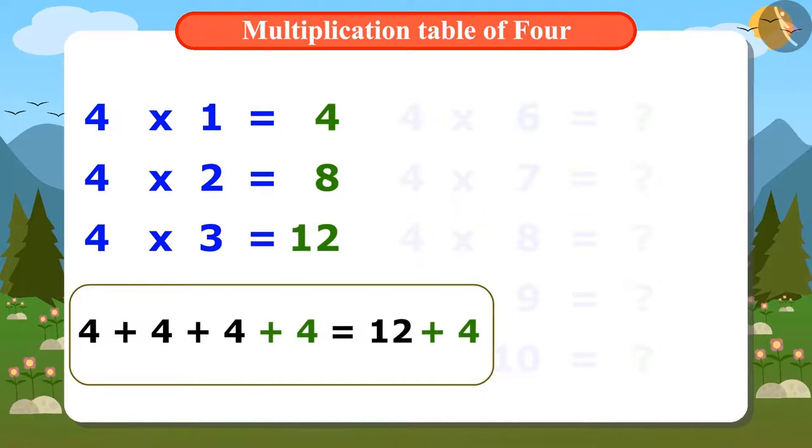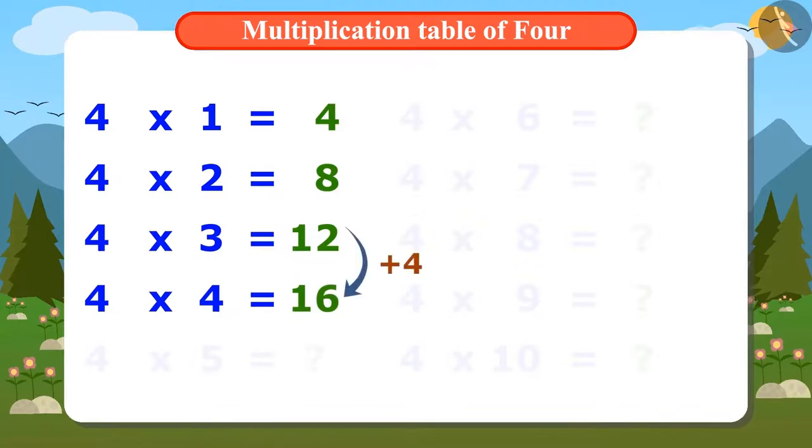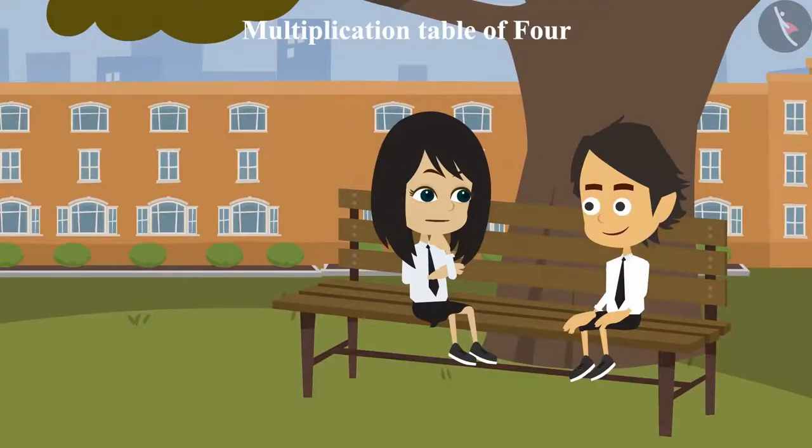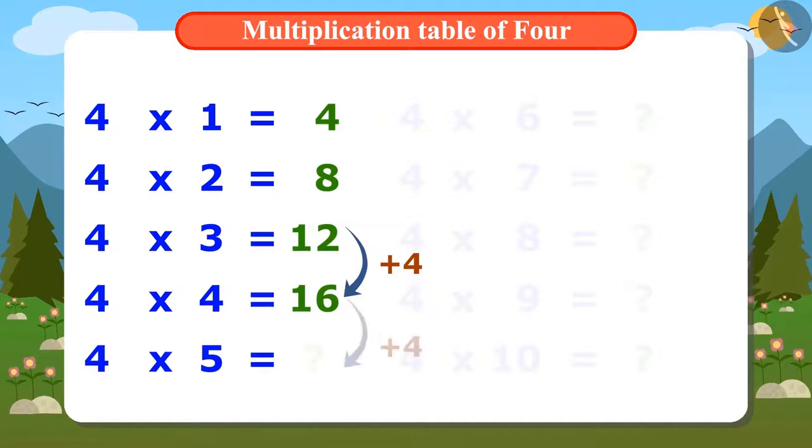Ok. Instead of adding 4 four times, we will add 4 to 12. That means we can find the next number in the multiplication table of 4 by adding 4 to 16, which will be 20.